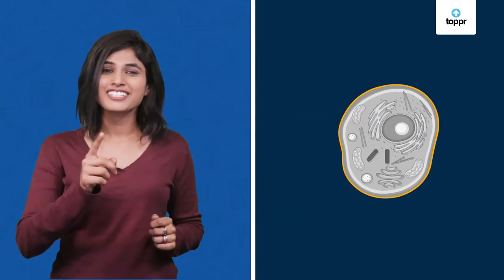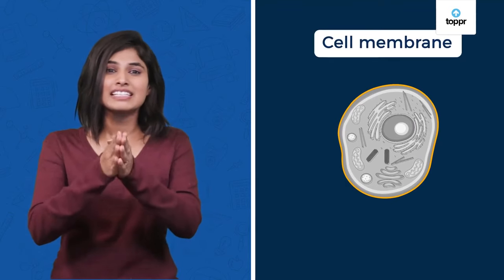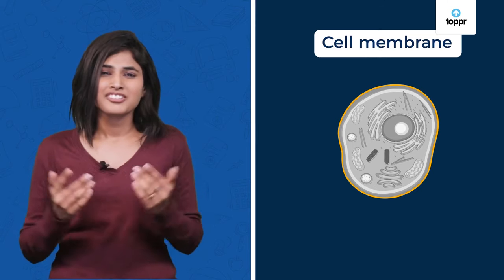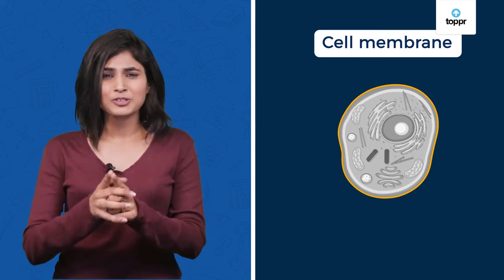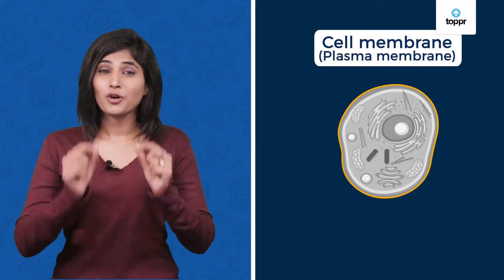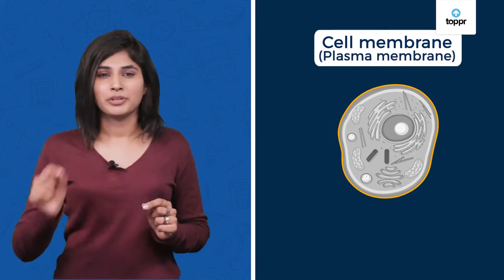First let's start with its name. The name of this cell boundary is cell membrane. Just like many of us, it also has an alias — we can also call it the plasma membrane.